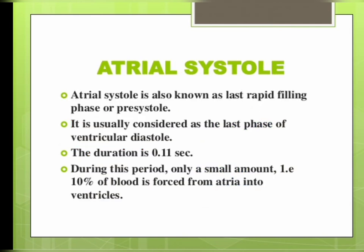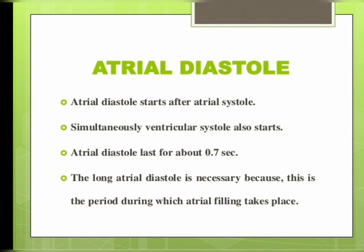The atrial systole is also known as the last rapid filling phase or pre-systole. It is usually considered the last phase of ventricular diastole and its duration is 0.11 second. During this period only a small amount — about 10 percent — of blood is forced from the atria into the ventricles. Atrial diastole starts after atrial systole and simultaneously ventricular systole also starts, lasting about 0.7 second.